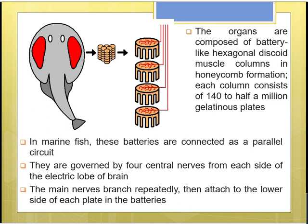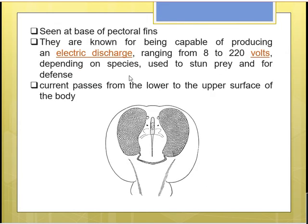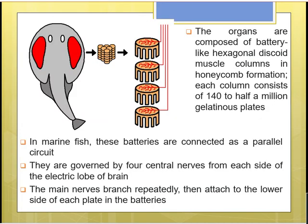These batteries are governed by four central nerves coming from each side of the electric lobe of the brain. The nerves branch repeatedly and attach to the lower side of each plate, enabling generation of electric currents ranging from 8 to 220 volts depending upon the species.